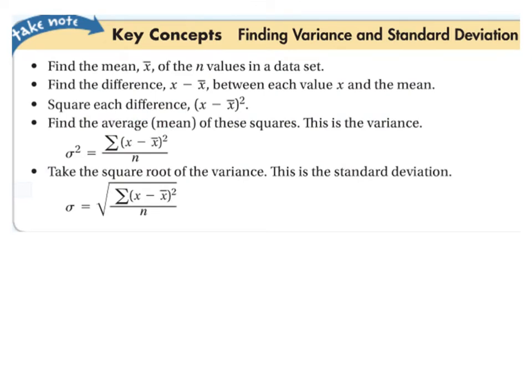Here's some concepts for finding variance and standard deviation. What we need is we find the mean or x-bar of the n values in the data set. We find the difference between each of those values and the mean. We square each difference and then we find the average or mean of those squares. That gives us the variance and here's what that formula looks like. And then we take the square root of that variance. That's our standard deviation.